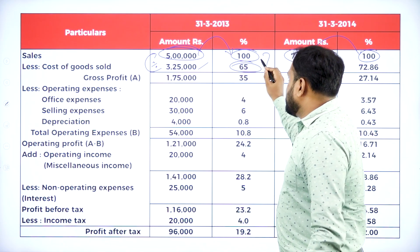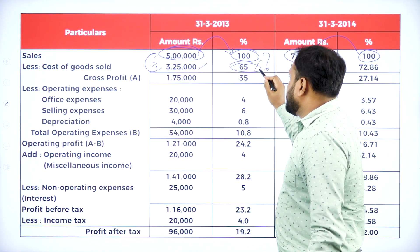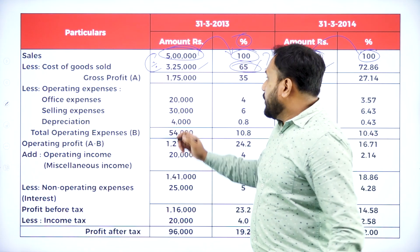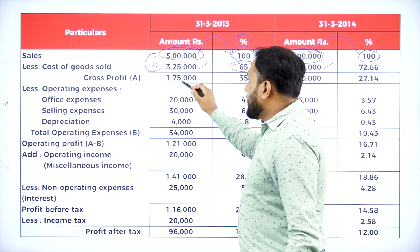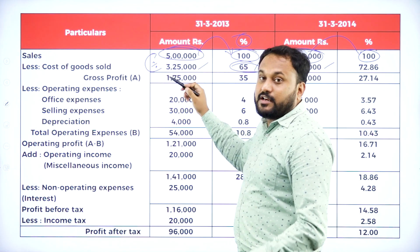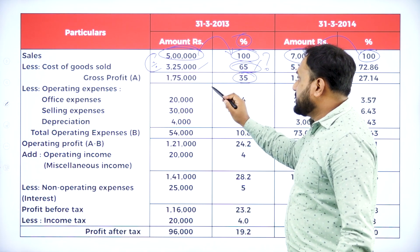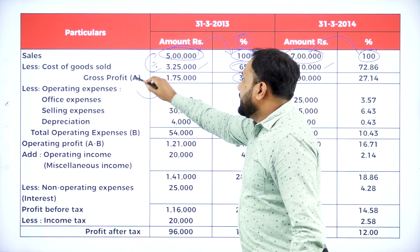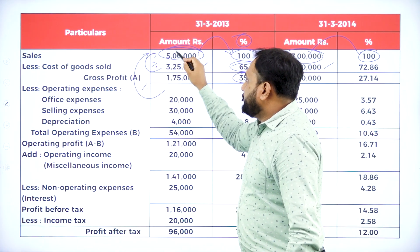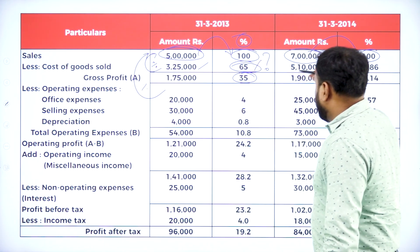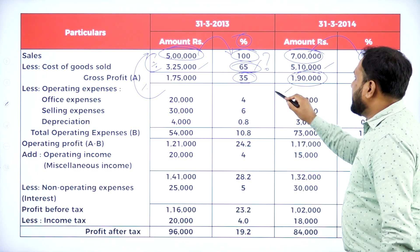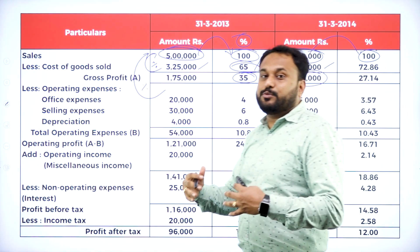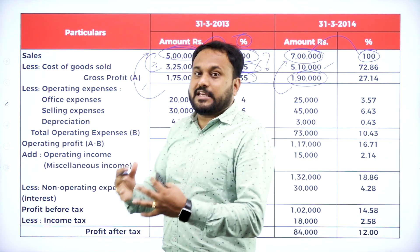The percentage of 65 is already written. For gross profit: deduct 1 lakh 75 thousand from sales. The percentage is 1 lakh 75 thousand divided by 5 lakh into 100. For 2014, it is 1 lakh 90 thousand divided by 7 lakh into 100 — because the base value is always the sales for that year.